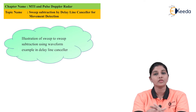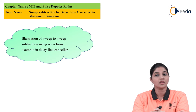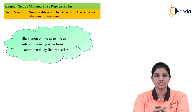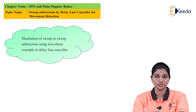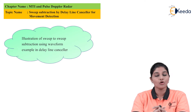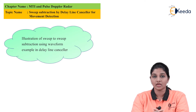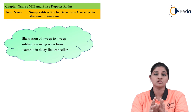Now, we know that the output of the MTI radar is nothing but the bipolar video signal which is having both positive and negative amplitude. This output signal, which is a bipolar video signal, is generated by using the MTI radar by using two successive sweeps.